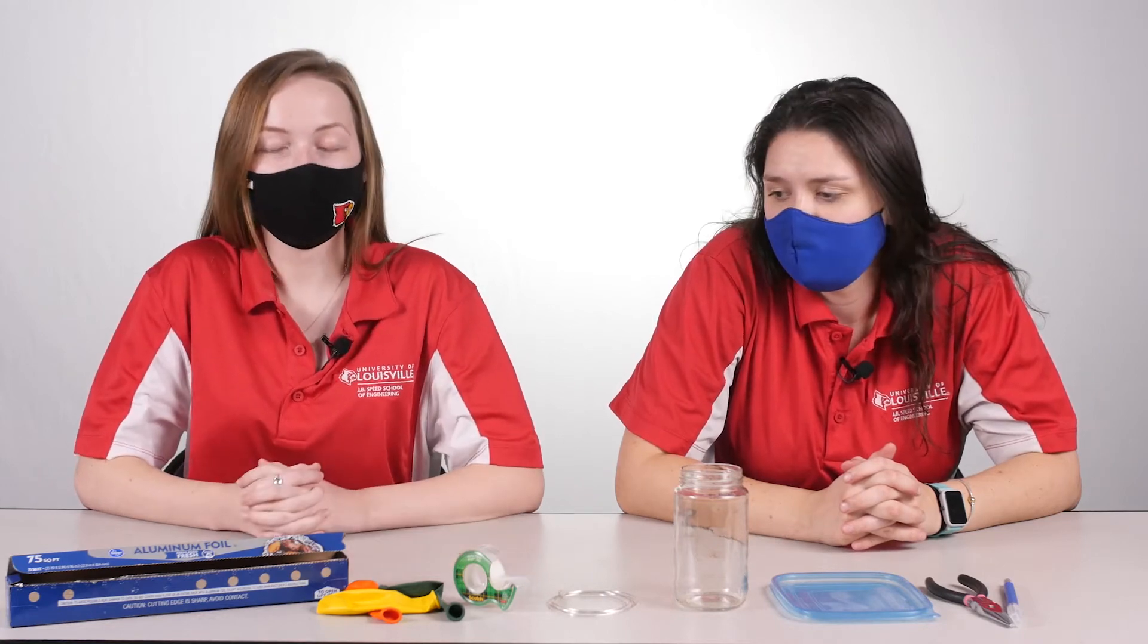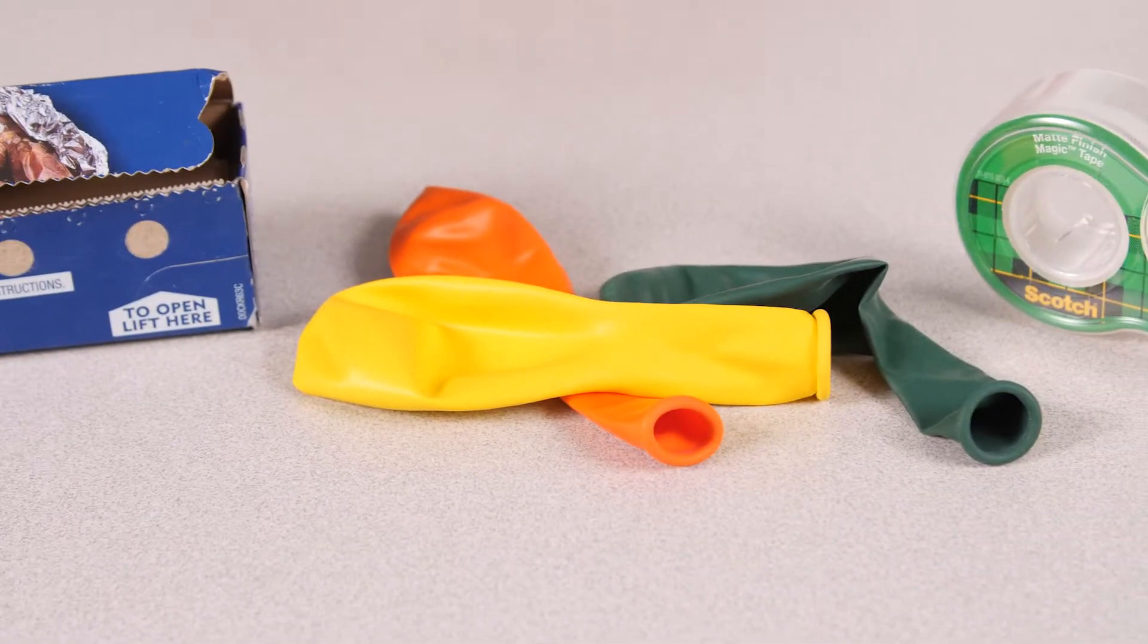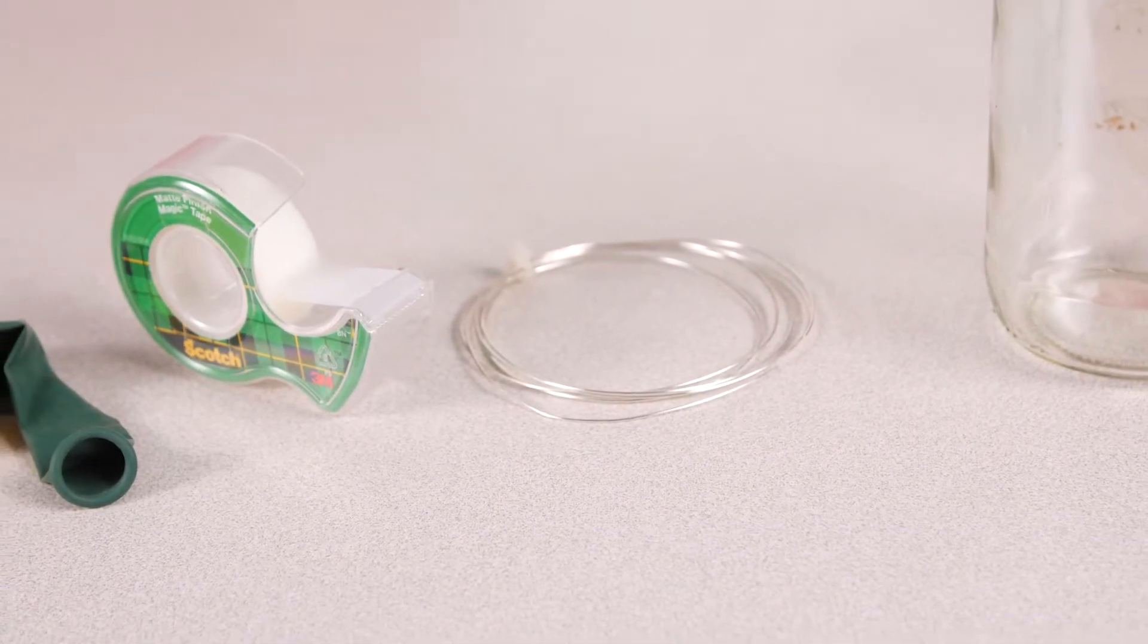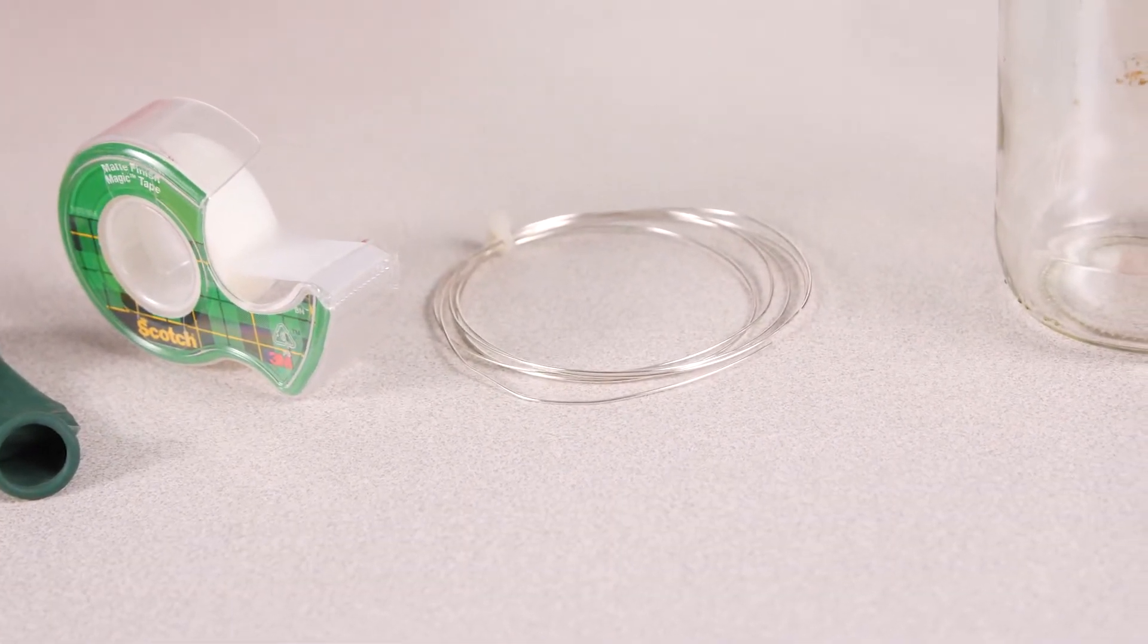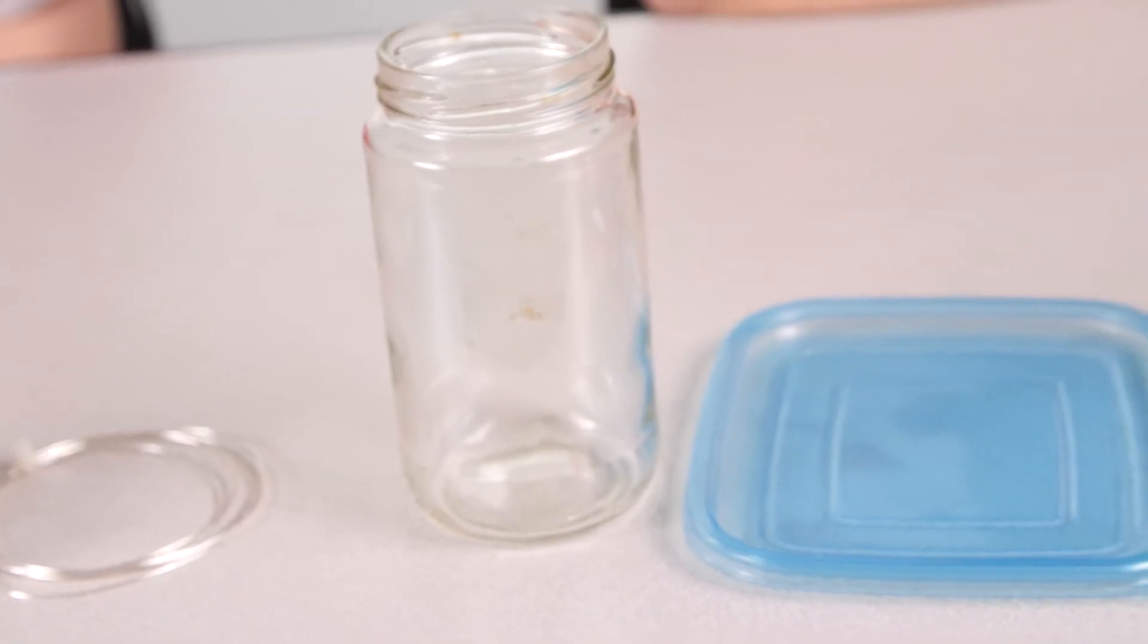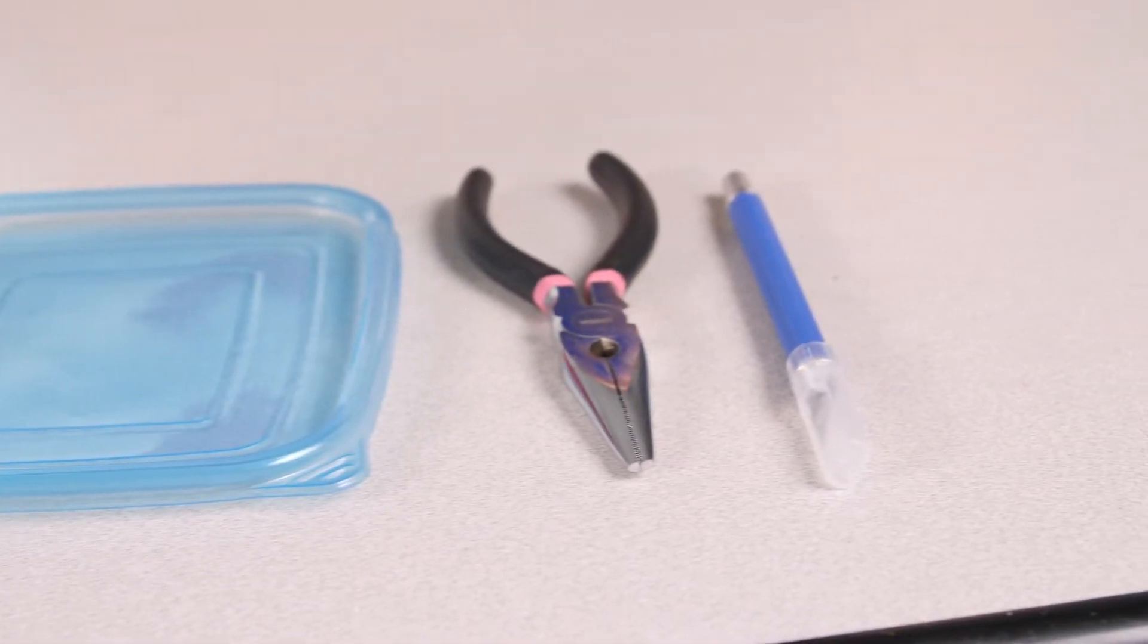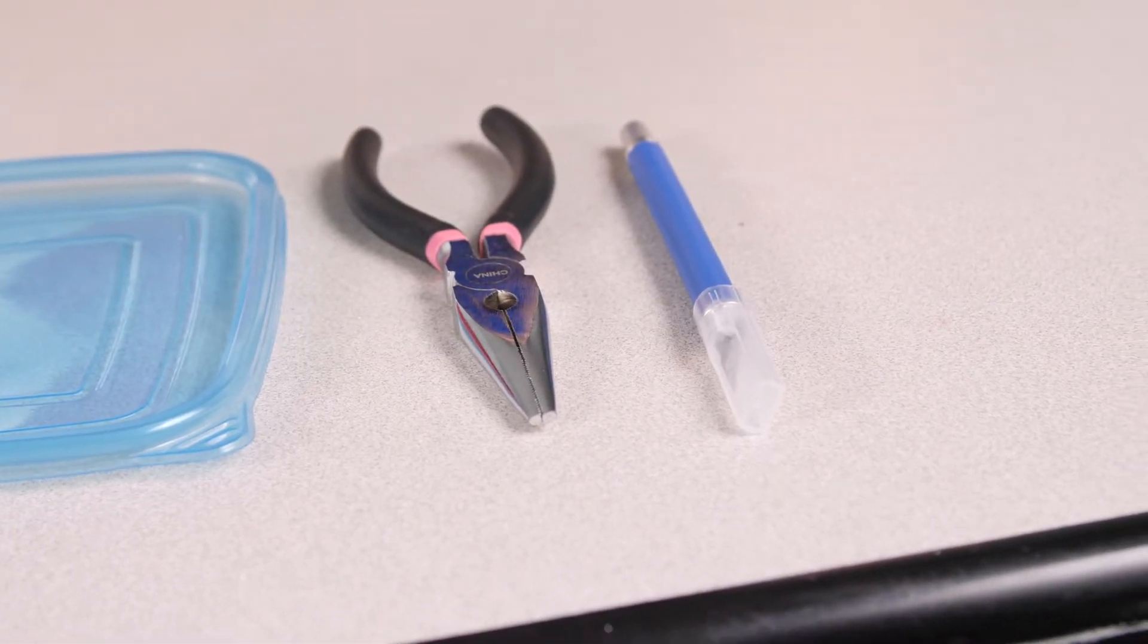So today we're going to be needing these materials: aluminum foil, a balloon, tape, some wire, although a paper clip would work as a good substitution, a glass or glass jar, a plastic lid, and for parental use only, you'll need pliers and an exacto knife.